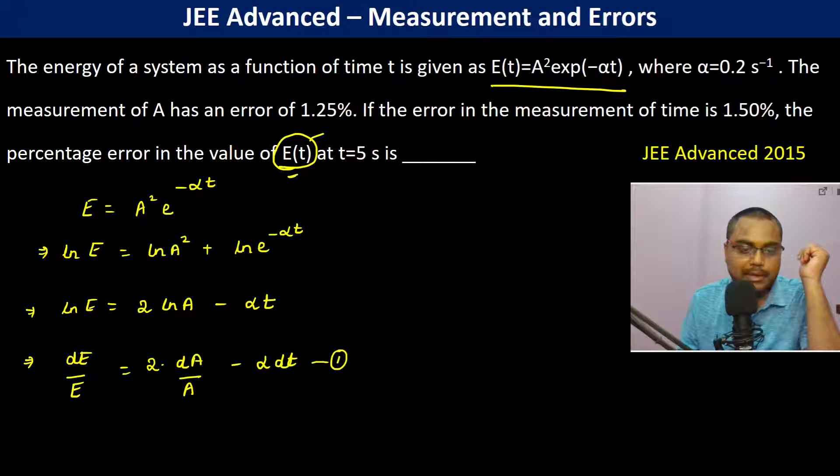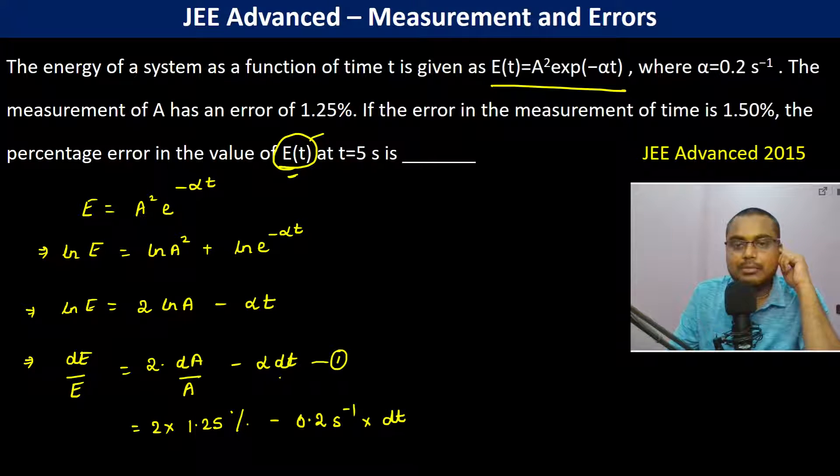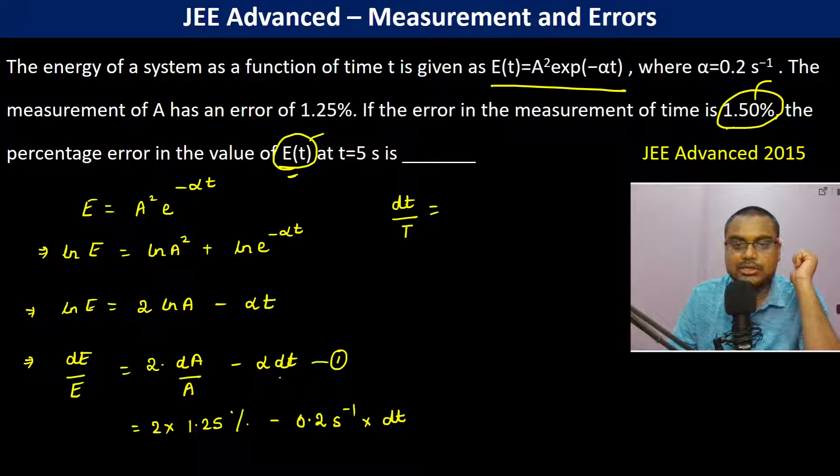So dA by A and dt. So 2 into dA by A, what is dA by A? It is 1.25 percent minus alpha. Alpha is 0.2 per second. And now this is dt. So now it is already mentioned that the error in measurement time is 1.5 percent. So therefore I can write that dt by t is 1.5 percent.